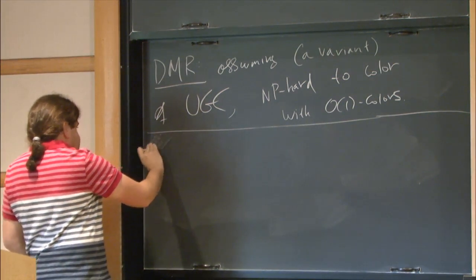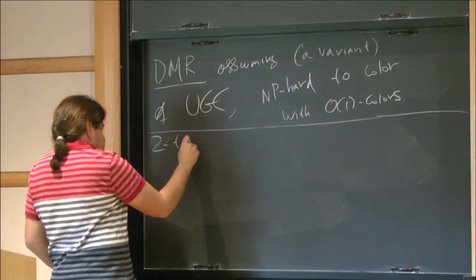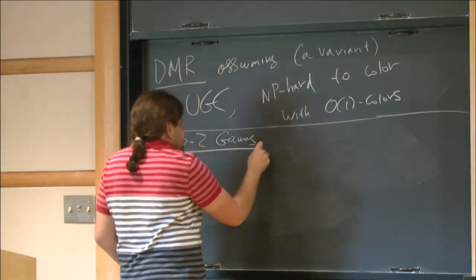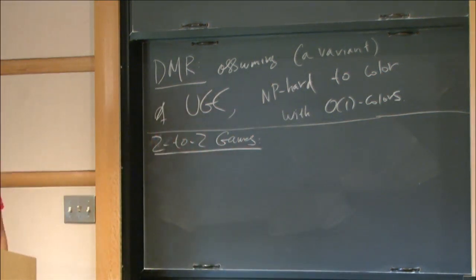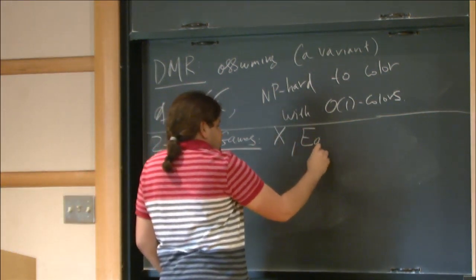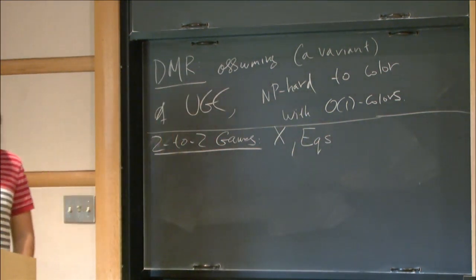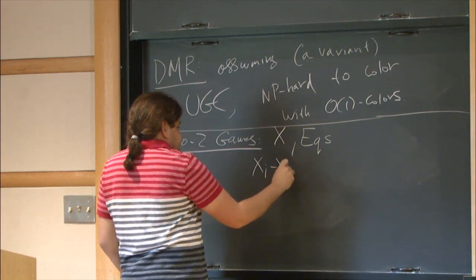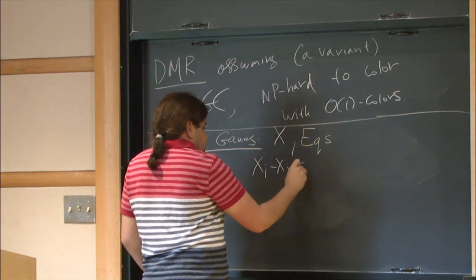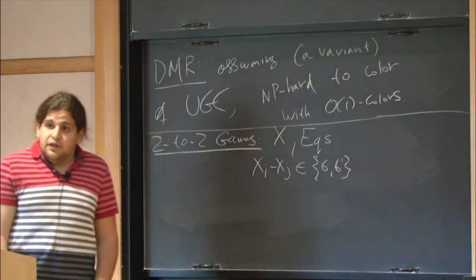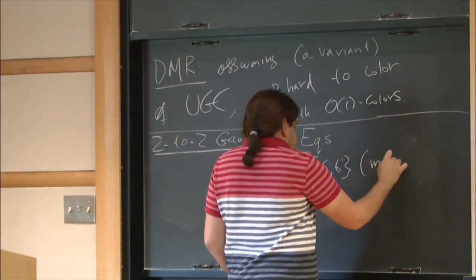So this is called 2 to 2 GAMES. I give you a set of variables, and a set of equations. And each equation is of the following form. Xi minus Xj is equal to either B or B prime. And arithmetic is over some finite field.